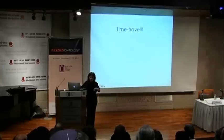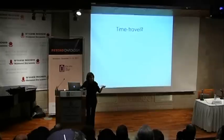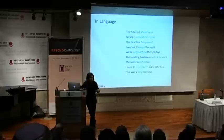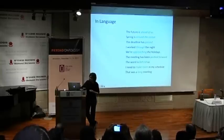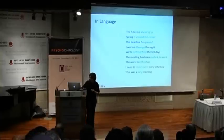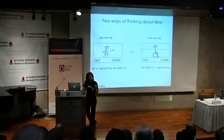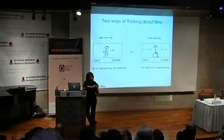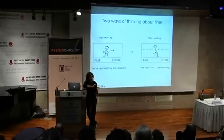If people in different languages were to differ in what parts of space they import into time, you'd expect people around the world to think about time differently. In English it's impossible to get away from spatial terms when talking about time: 'the future is ahead of us,' 'spring is around the corner,' 'the deadline has passed.' In English, we have two contrasting ways of treating time. One is the ego-moving metaphor — we're moving on a path from past to future, 'we're approaching the deadline.' We can also flip it: 'the deadline is approaching' — you're stationary and time is coming towards you, like a train or a river.